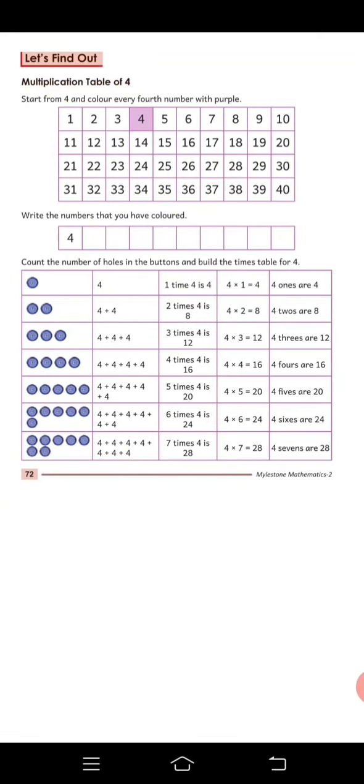multiplication table of 4. Now, we have colored 4 into 4. Now, what do you have to do? 4 plus 4 is equal to 8. So, what do you have to do? 8. This is the way you have to color. And here, write it.